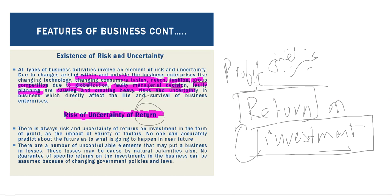These losses may be caused by natural calamities, and there is no guarantee of a specific return. If there is a flood and products are damaged, or if there is an earthquake or any other natural calamity, there is no surety or certainty of profit or return in the business.